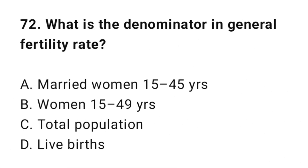Question number seventy-two: What is the denominator in general fertility rate? The correct option is B: Women aged 15 to 49 years.